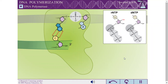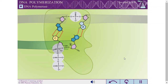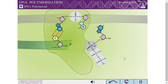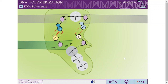Correct base pairing is also required for catalysis. If an incorrect base pair forms, the alpha phosphoryl group of the dNTP cannot properly align with the three-prime hydroxyl of the primer strand. Once the proper dNTP is bound in the pocket, the reaction can continue. The palm domain also binds two divalent metal ions, which are crucial for DNA polymerization activity.